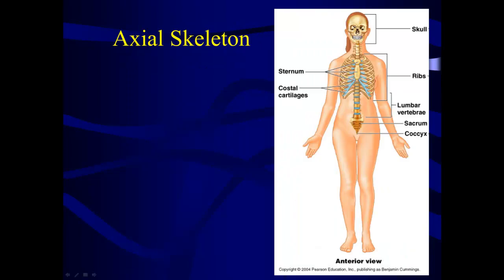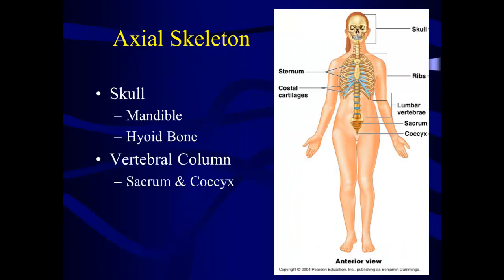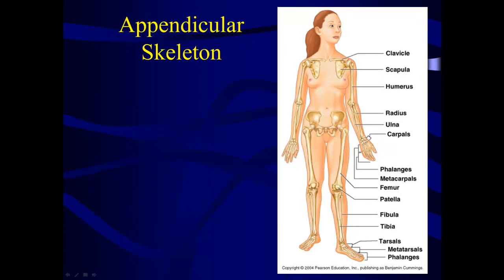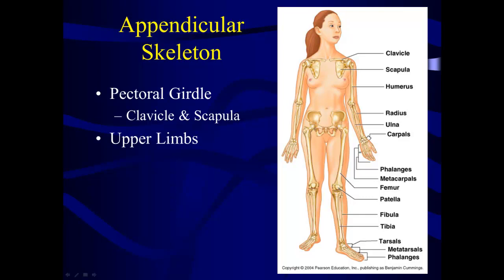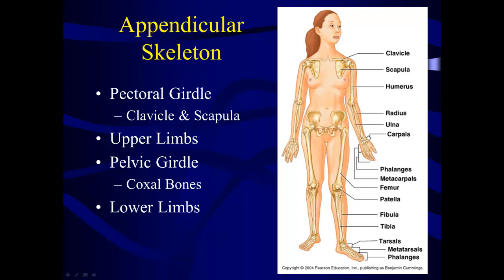The axial skeleton includes the skull (with the mandible and hyoid bone), the vertebral column, sternum, coccyx, and ribs. The appendicular skeleton includes the pectoral girdle (clavicle and scapula) and upper limb bones: humerus, radius, ulna, carpals, metacarpals, and phalanges. It also includes the pelvic girdle made up of the coxal bones, and the lower limbs: femur, patella, tibia, fibula, tarsals, metatarsals, and phalanges.